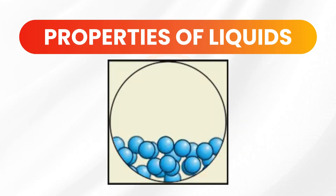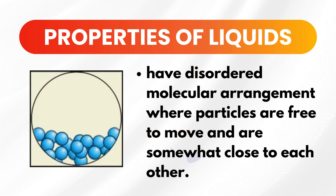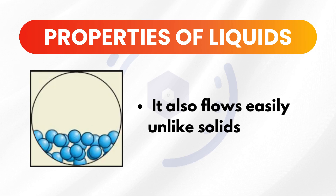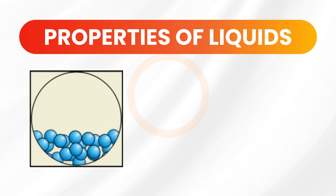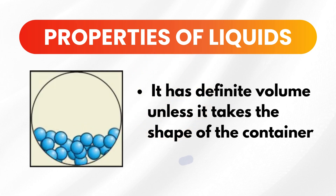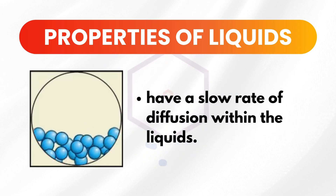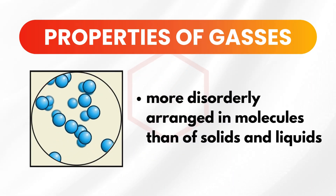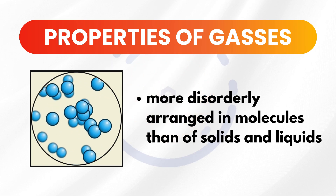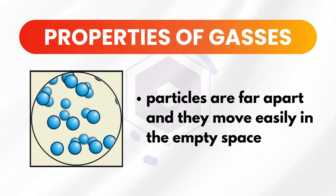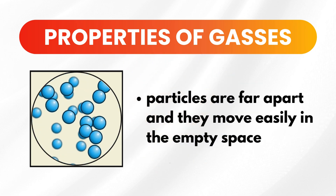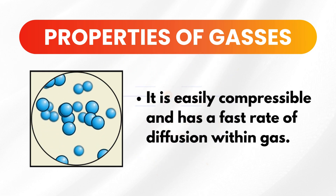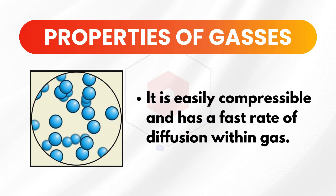Liquids, on the other hand, have particles that are free to move and are somewhat close to each other. Liquids flow easily unlike solids. They have a definite volume but take the shape of the container. Liquids also have a slow rate of diffusion. Gases are more disorderly arranged than solids and liquids. Their particles are far apart and move easily in the empty space. Gases are easily compressible and have a fast rate of diffusion.